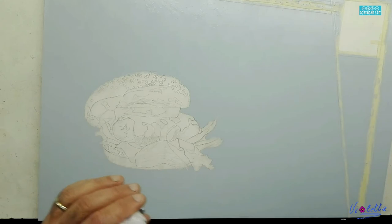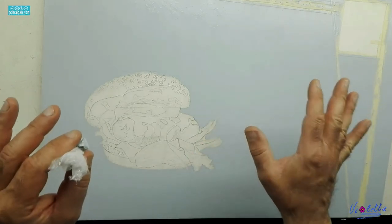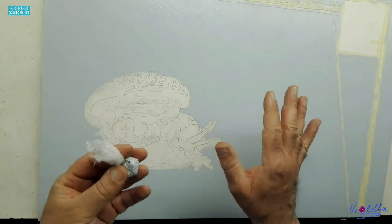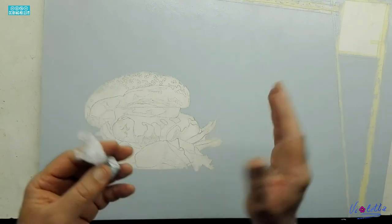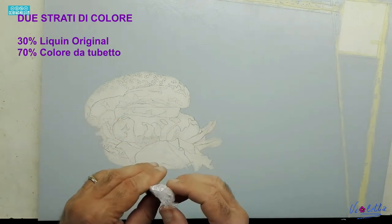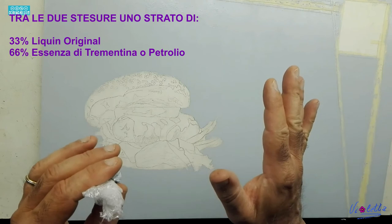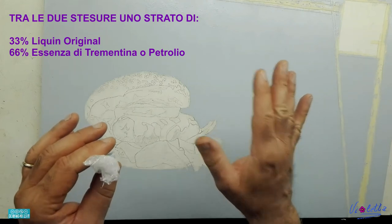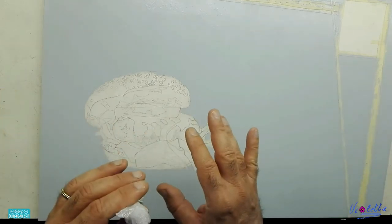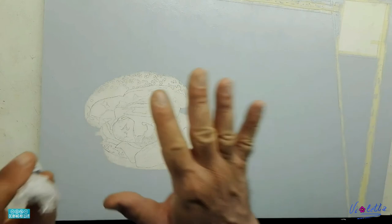As I proceeded for the background, I passed three coats of this color with liquid, let's say almost 30 percent liquid and 70 percent color. Between the first and second coat I passed retouching varnish made with two parts turpentine and one part liquid to seal the background even better.